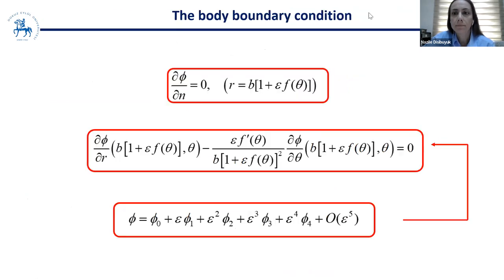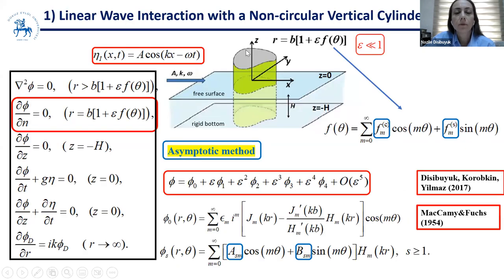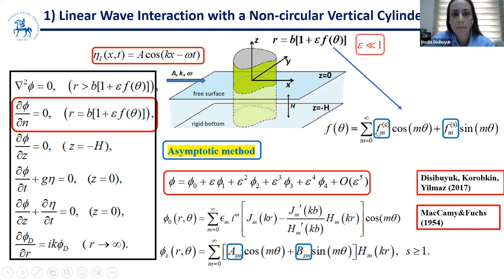The first problem is linear wave interaction with a non-circular vertical cylinder — a bottom-bounded cylinder in finite water depth with no ice. The cross-section of the cylinder is given by an equation where b is the mean radius, and we perturb the shape of the circular cylinder using a small parameter epsilon times a shape function f(theta). Here epsilon is the small parameter and f(theta) is a smooth bounded shape function. We assume a linear one-dimensional incident wave coming from minus infinity with amplitude a and frequency omega.